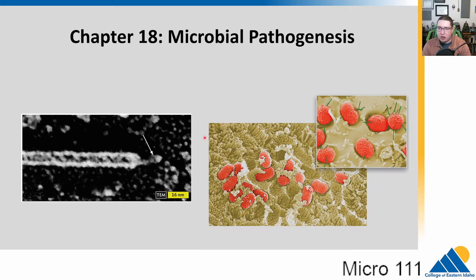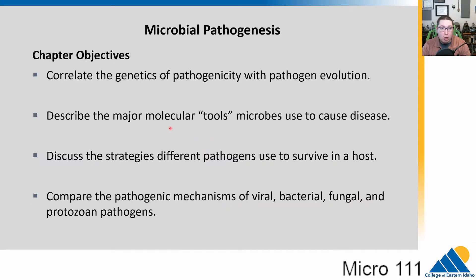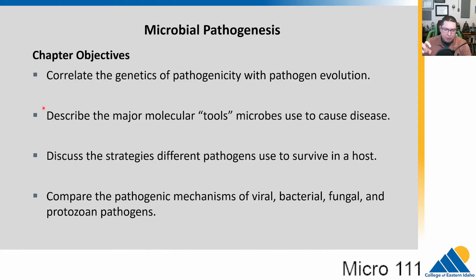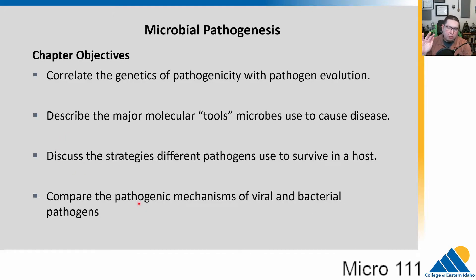In chapter 18, microbial pathogenesis, we're going to talk a lot about pathogenicity — the ability of a pathogen to cause disease — and we'll briefly touch on some of the genetic factors that lead to that. Spoiler alert: it's mainly horizontal gene transfers we've talked about previously. We'll talk about the mechanisms that microbes use to cause disease, and then we'll talk about different strategies they use to survive in a host, and finally some differences between viruses and bacteria.